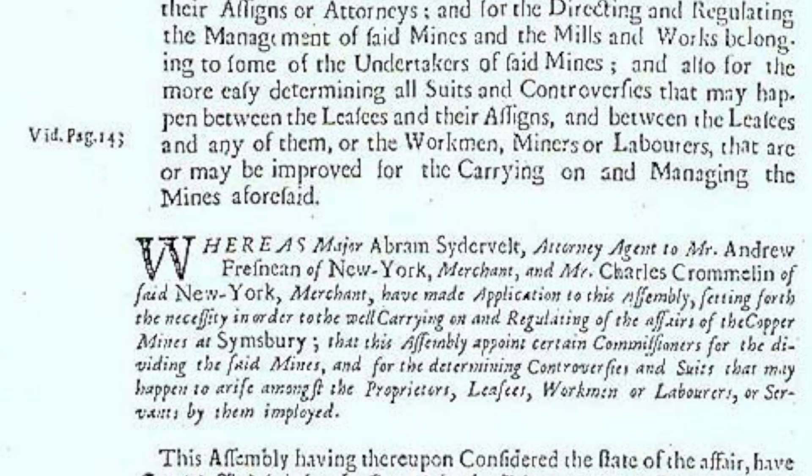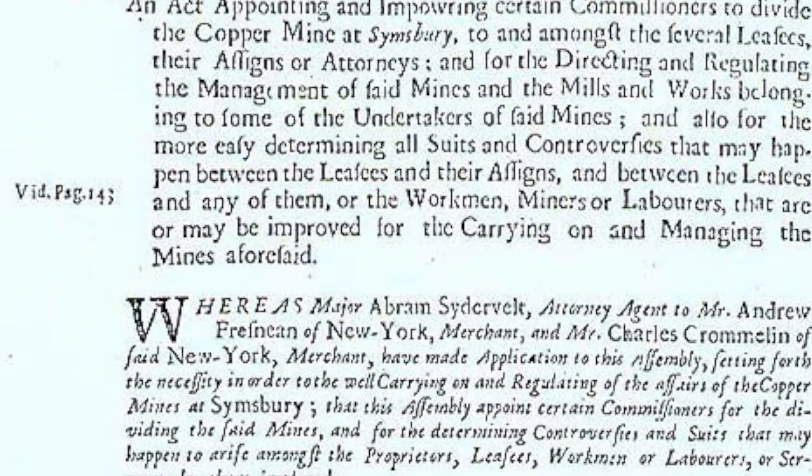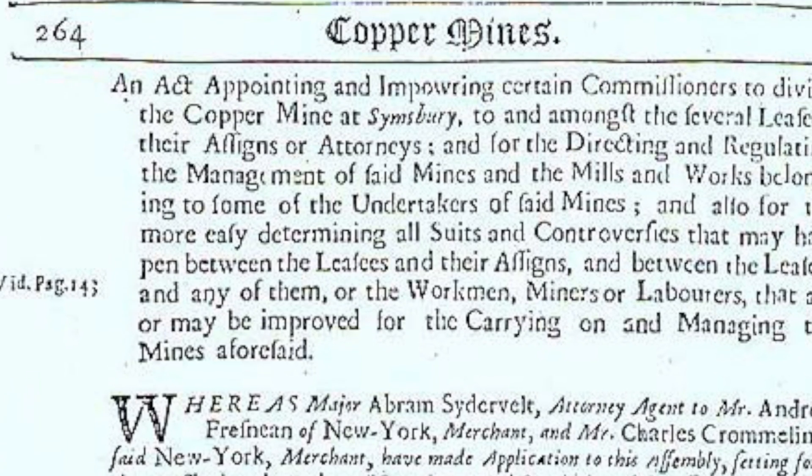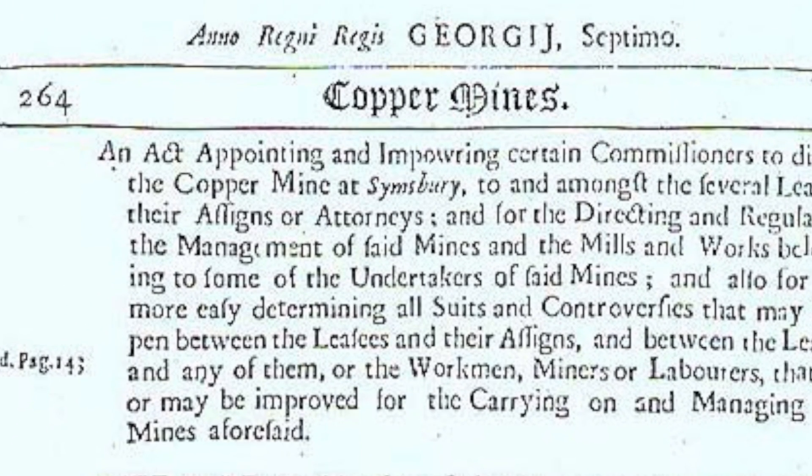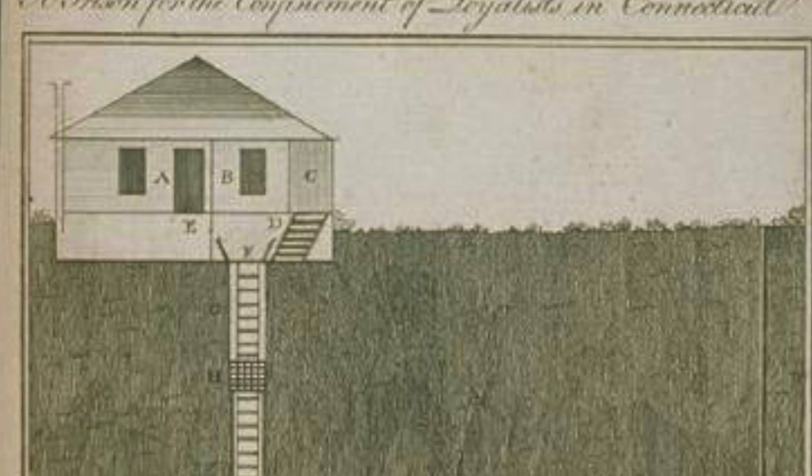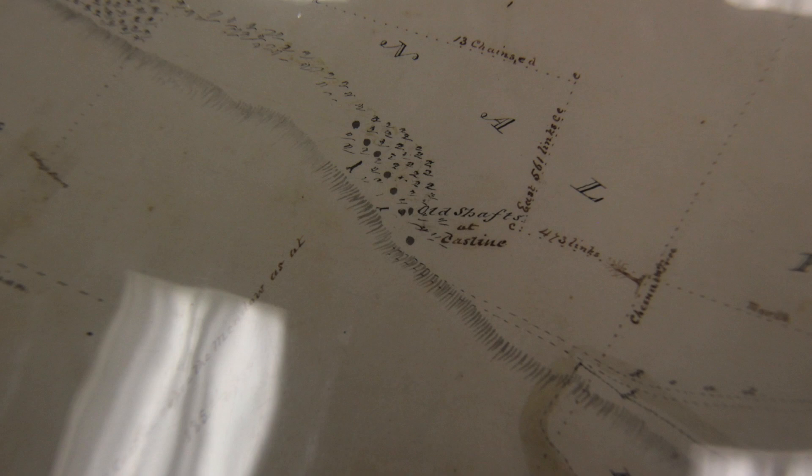Here's one example of how I find a mine site. I was at the Connecticut Historical Society looking for information on the Simsbury Mine, which is the oldest chartered copper mine in America. Simsbury Mine was turned into a prison during the Revolutionary War called Newgate Prison, but there are other outlying mines that were mentioned in some early 1700s documents that were simply forgotten about.